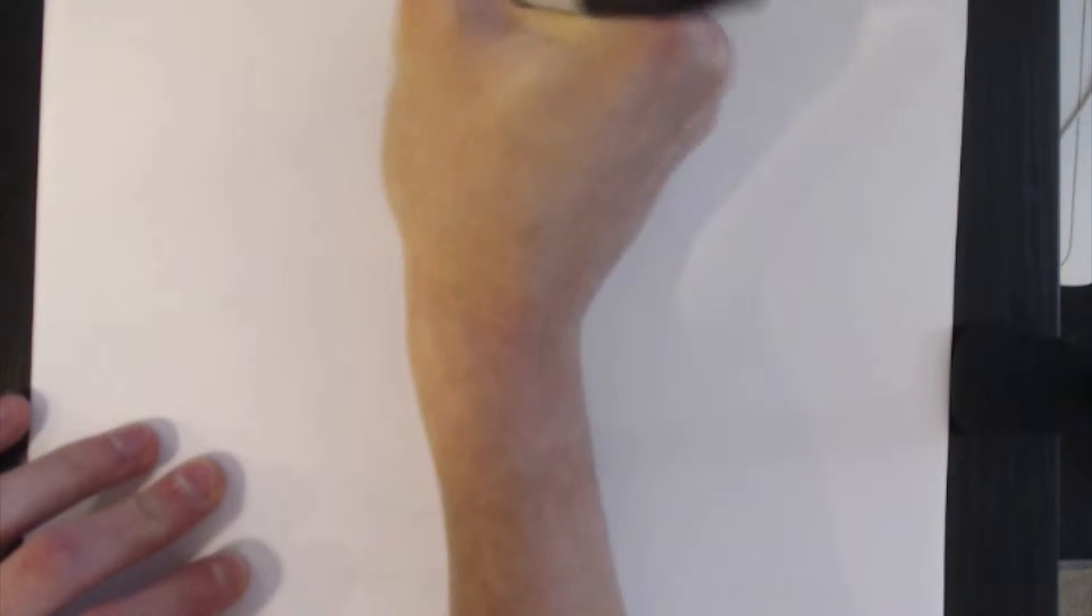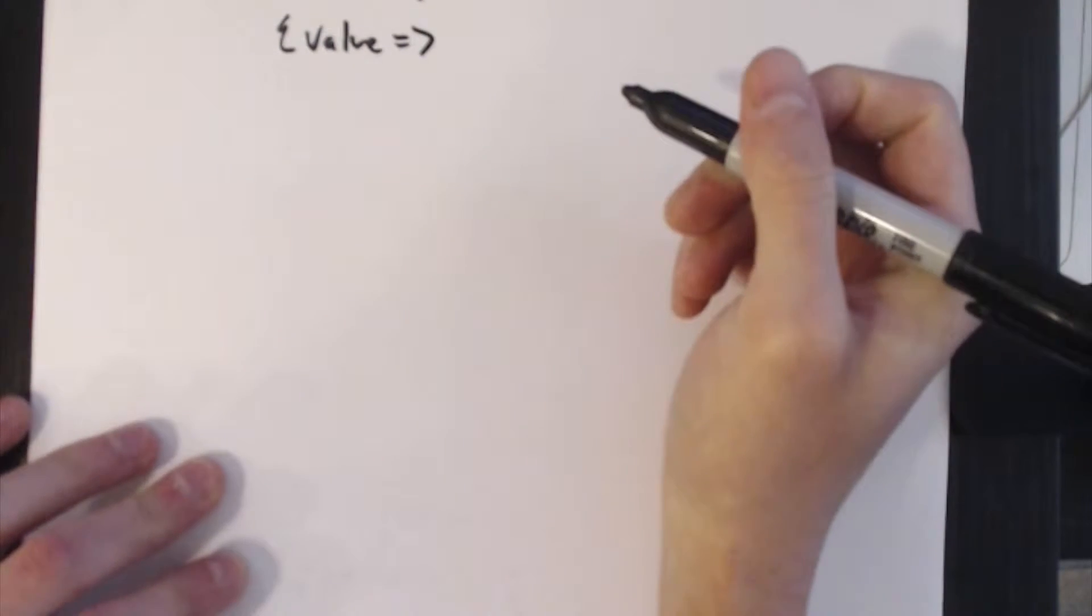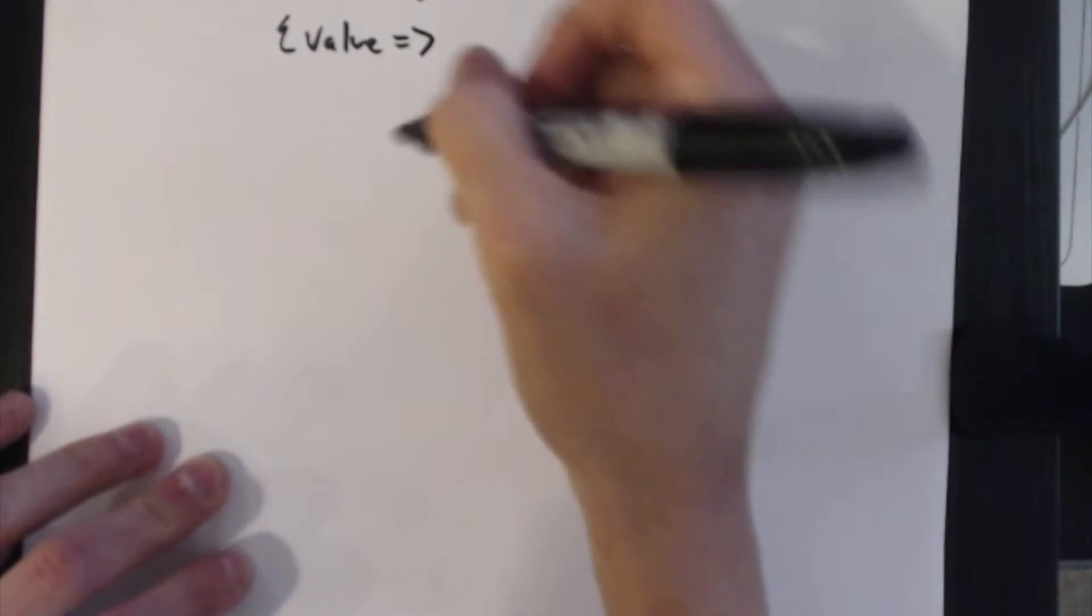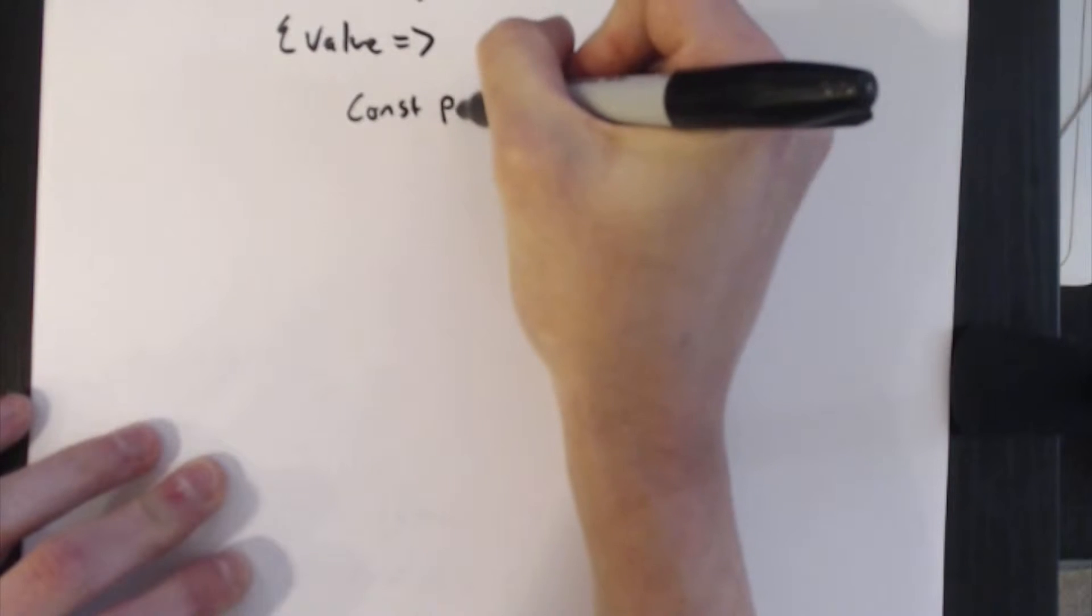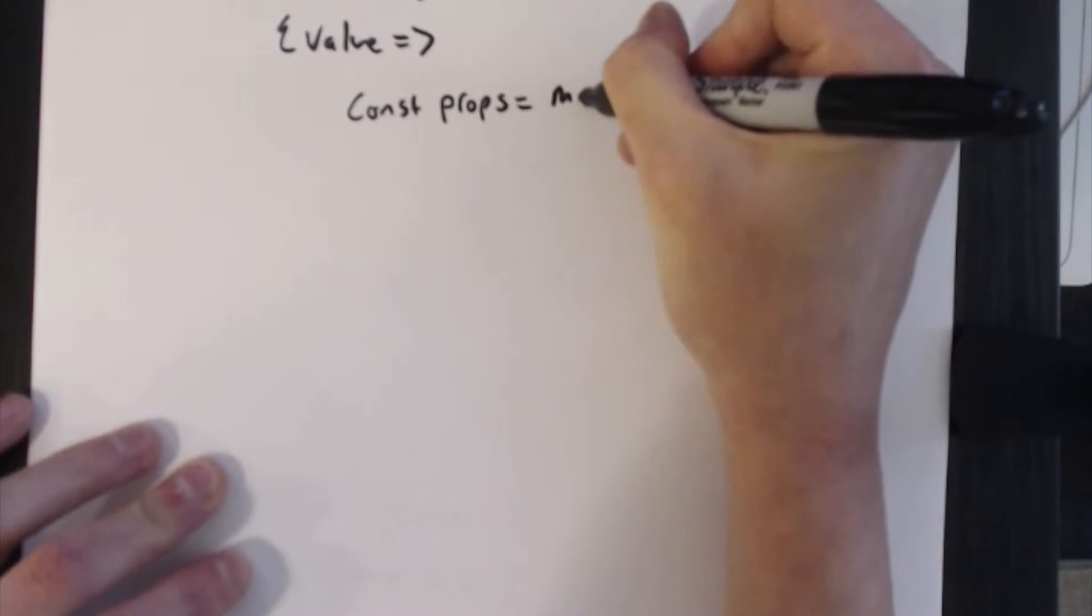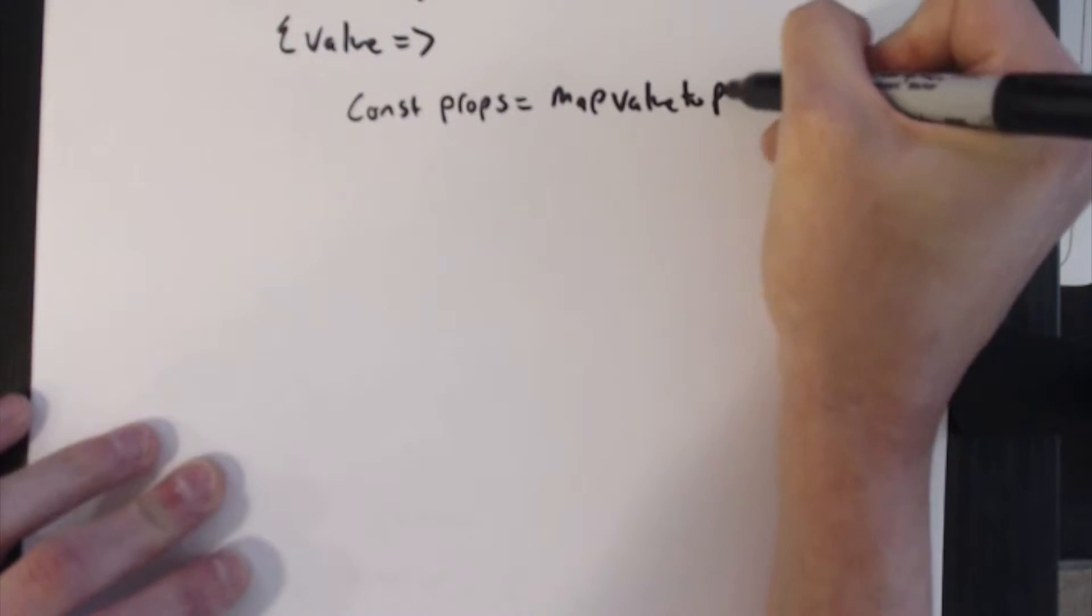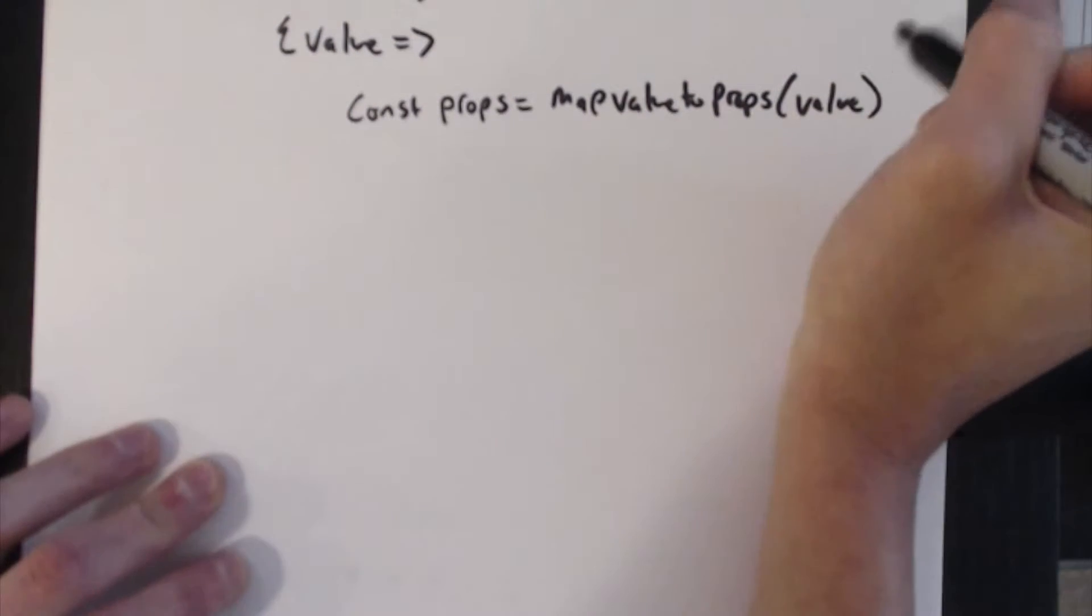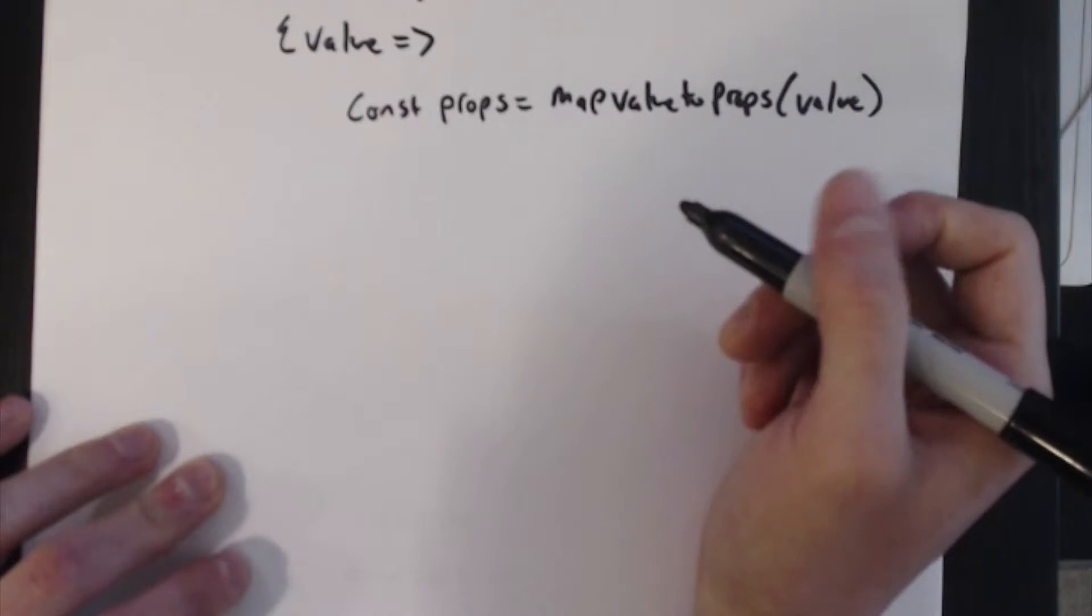So let's consider what that would look like. In our context consumer we have this value function where it passes in the value and we're supposed to render whatever we want. So we could create const props equal to the return value of calling our mapValueToProps function and passing in the context value. So once again, that function slices off just the object.